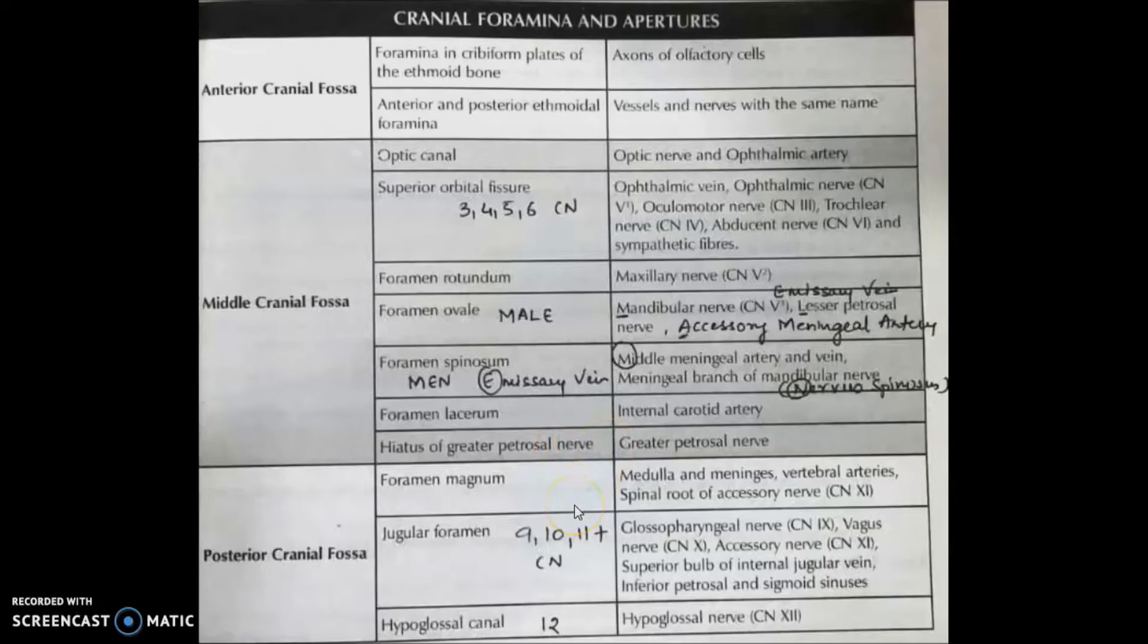In posterior cranial fossa, we have foramen magnum, through which mostly the spinal root of accessory nerve passes. Then we have jugular foramen, through which the cranial nerves number 9, 10, and 11 pass. And through hypoglossal canal, we have the traveling of hypoglossal nerve.